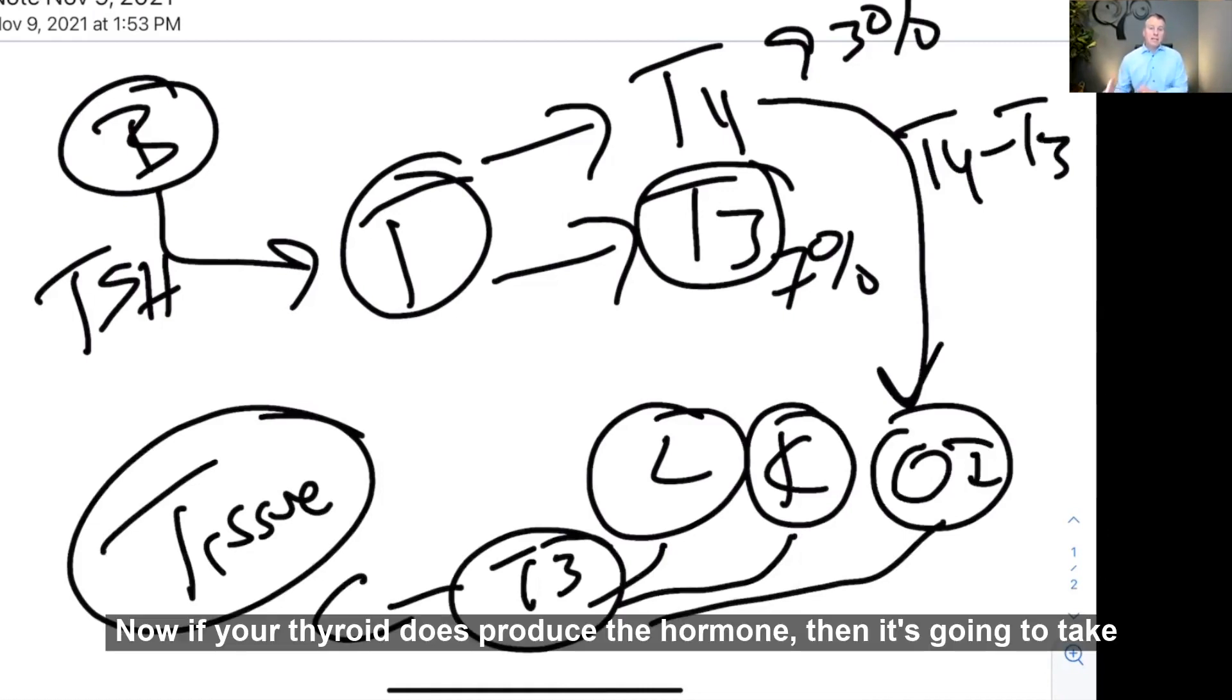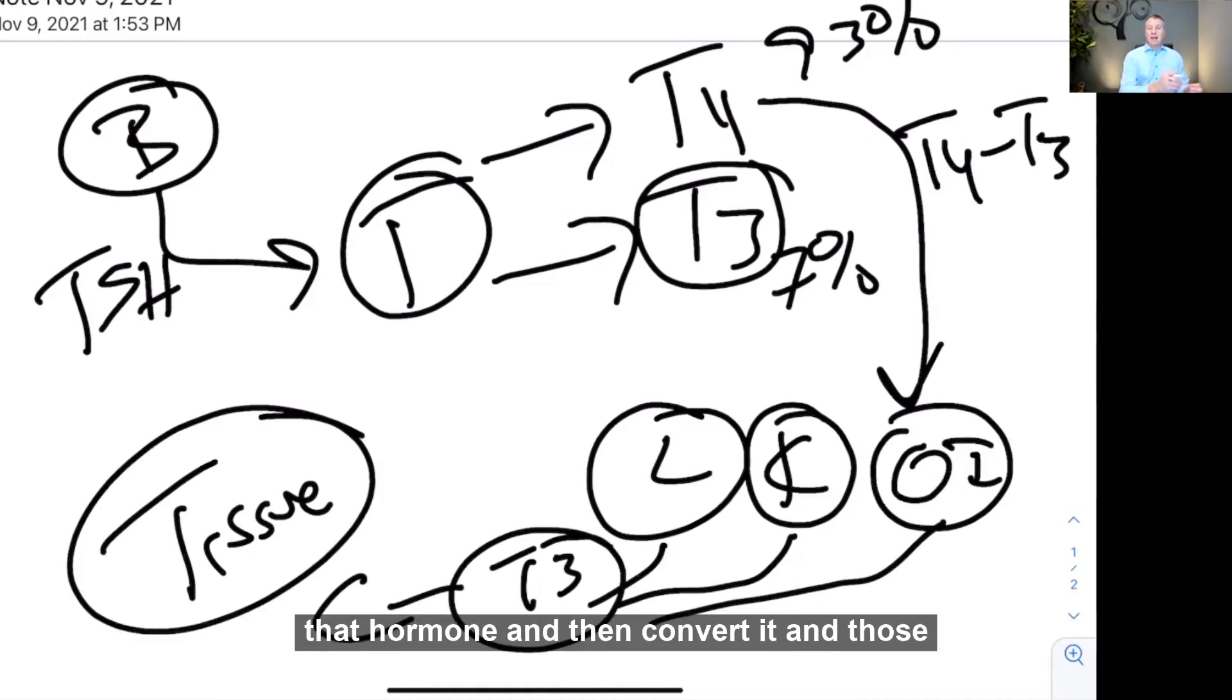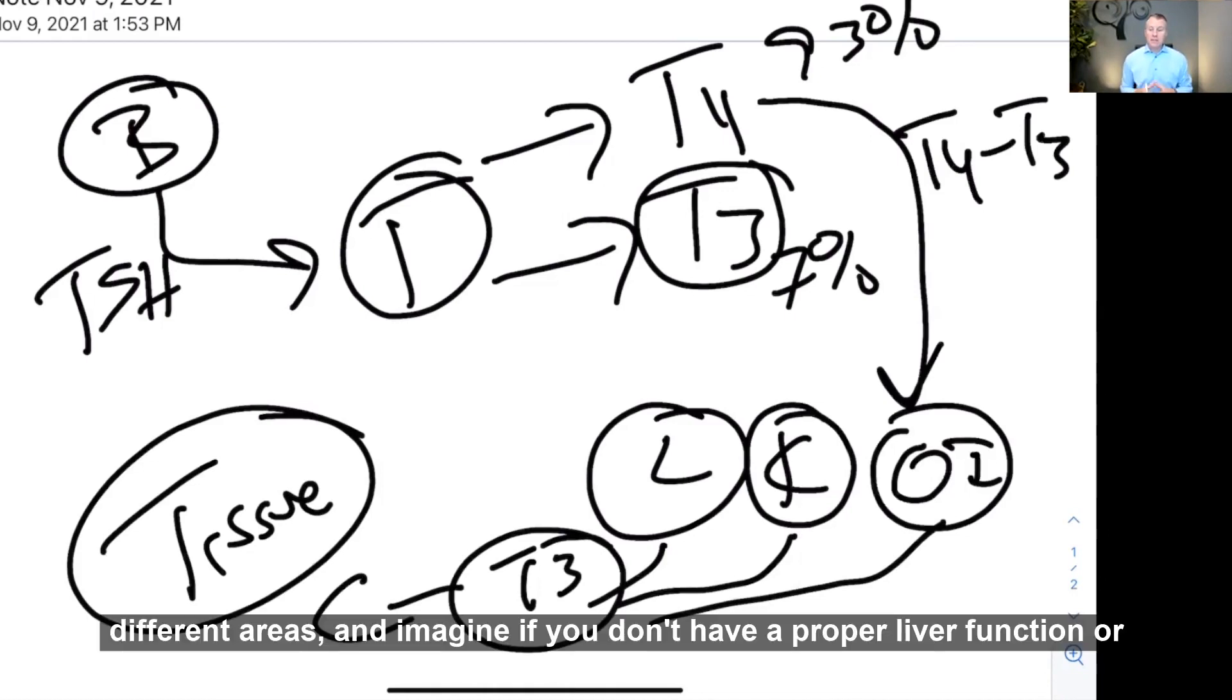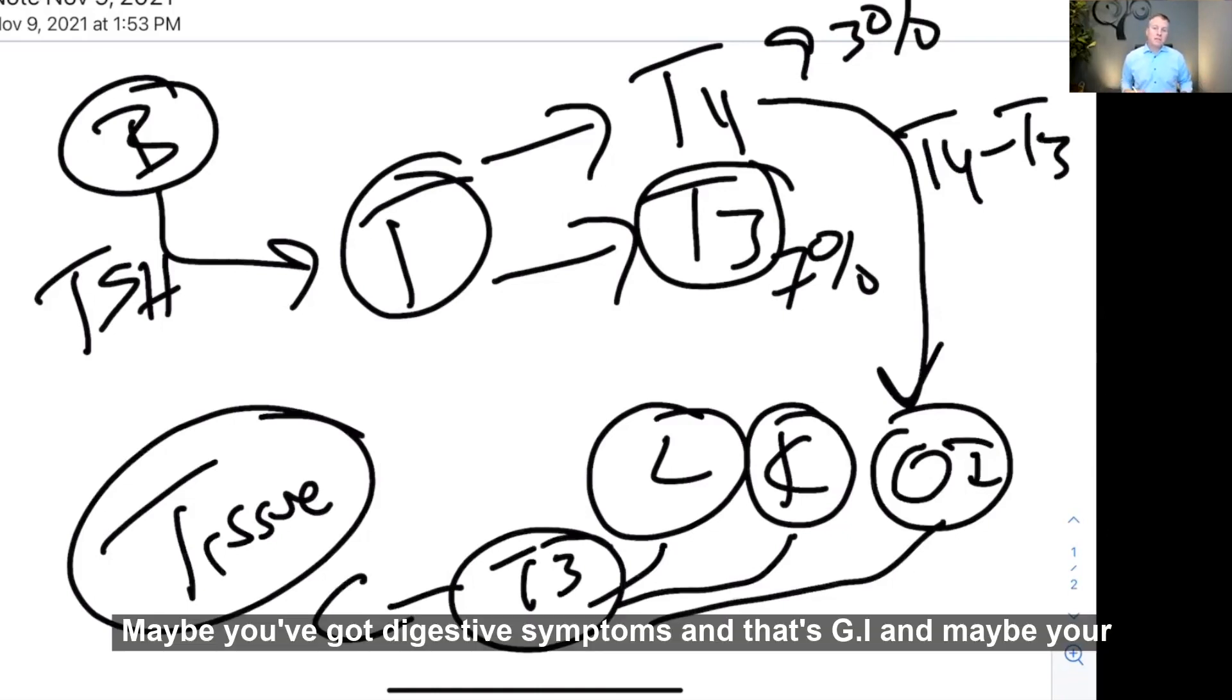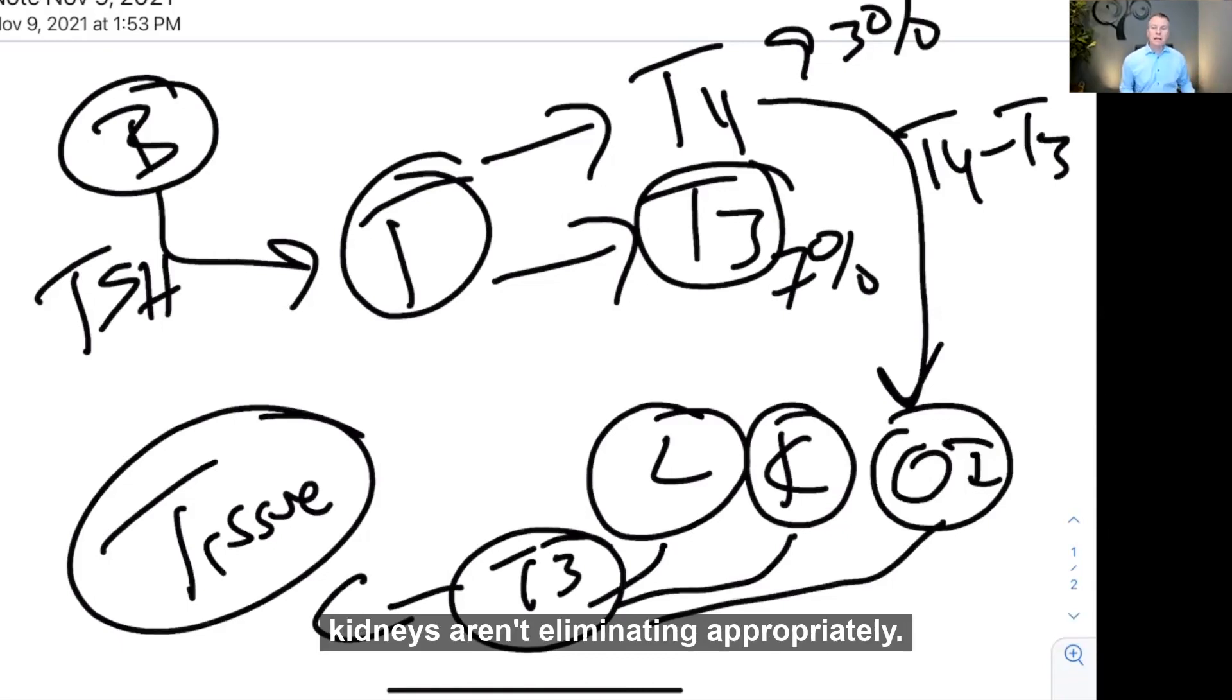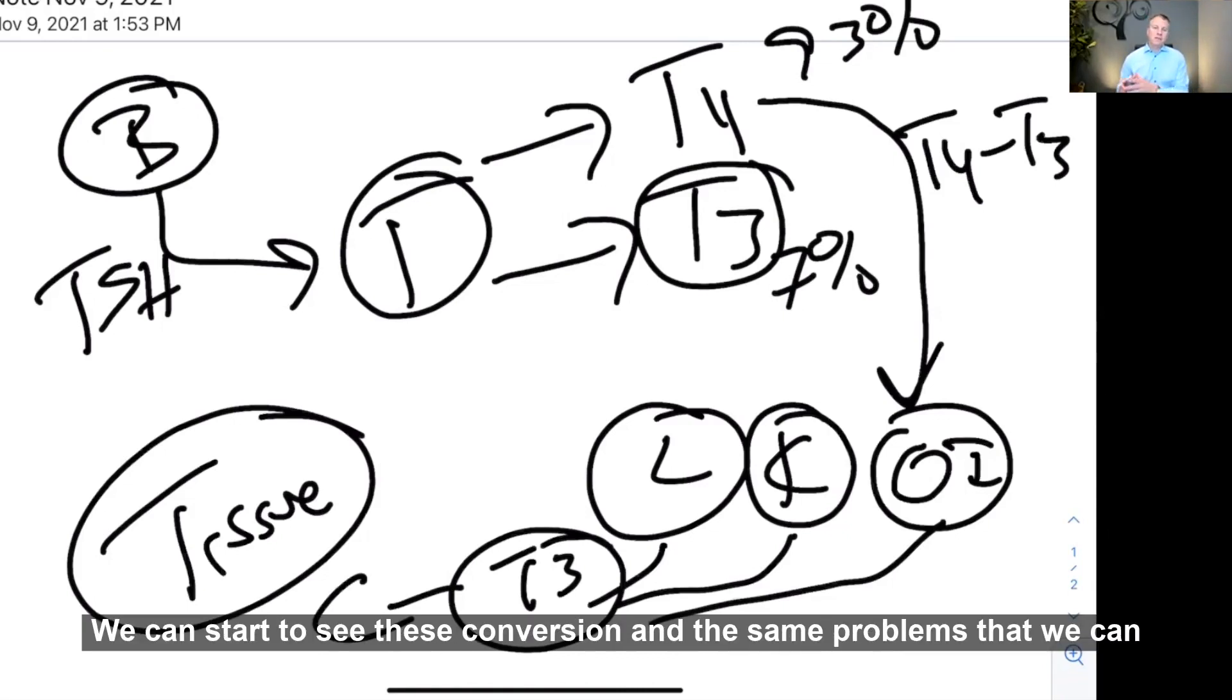Now if your thyroid does produce the hormone, then it's going to take that hormone and then convert it in those different areas. And imagine if you don't have a proper liver function or proper kidney function or your GI is not functioning properly. And how do we know that? Well, maybe you've got elevated cholesterol, that's a liver problem. Maybe you've got digestive symptoms and that's GI, and maybe your kidneys aren't eliminating appropriately. We can start to see this conversion.